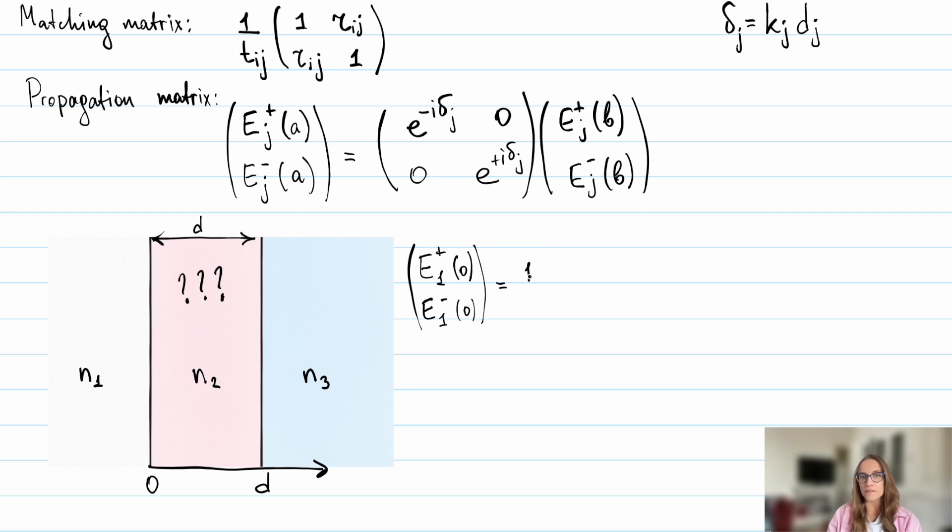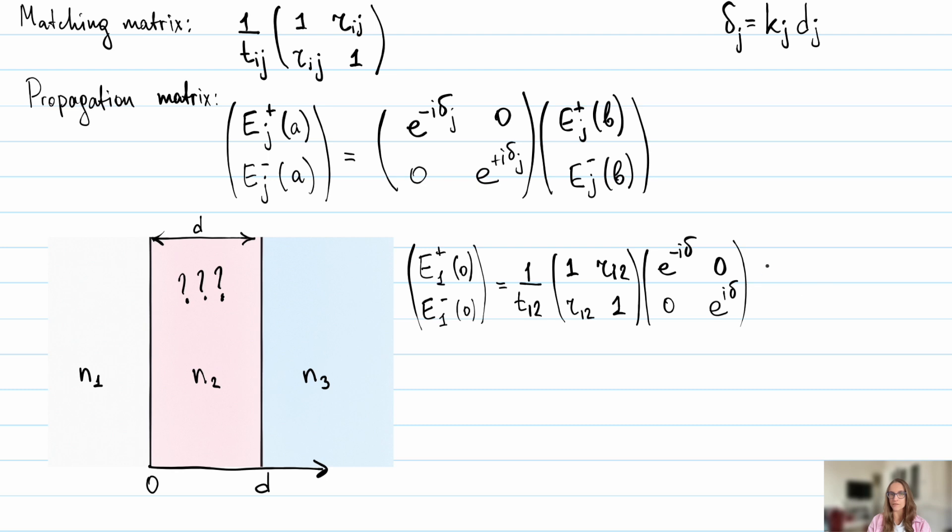But actually, we can extend this method to multilayer systems as well. But for this case, all we need to do is multiply three matrices: the matrix of the first interface, the propagation matrix, and the second interface matrix. This gives us a way to connect the incoming and outgoing fields.